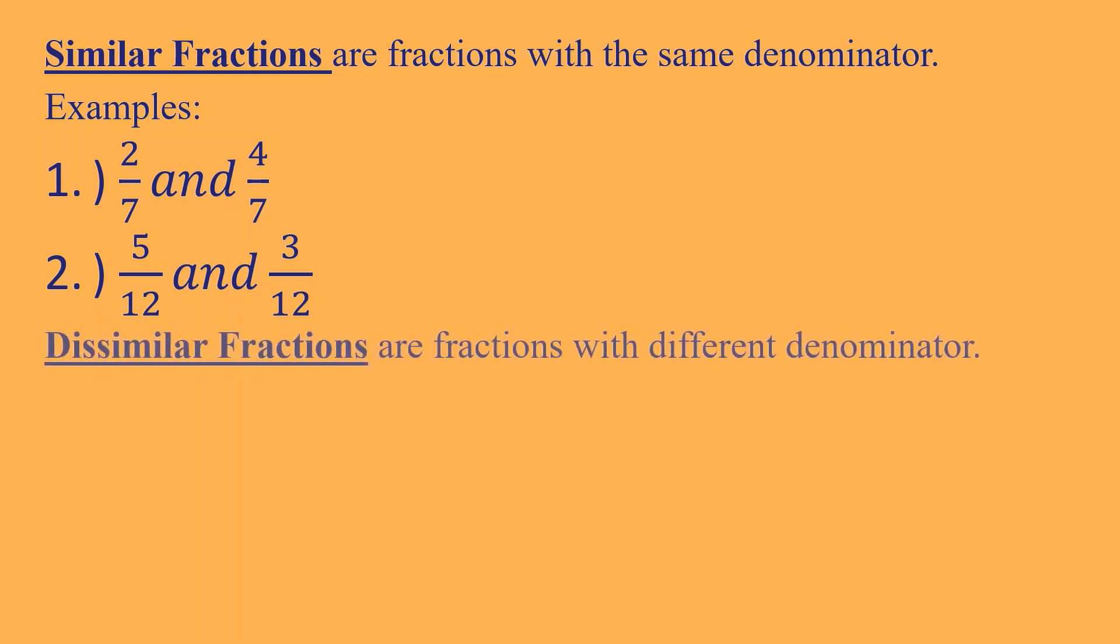Now, ano naman yung dissimilar fractions? These are fractions with different denominators like 7 over 13 and 5 over 9. So kitang-kita dito, yung 7 over 13 at 5 over 9 magkaiba ng denominator. That's why they are dissimilar. 13 at saka 9 magkaiba, kaya dissimilar sila. Another example is 11 over 21 and 6 over 10. So 21 and 10 are different denominators. That's why they are called dissimilar fractions.